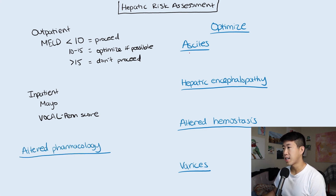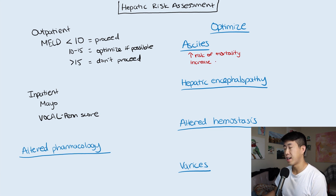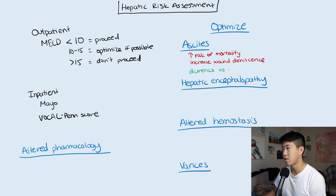Starting with ascites: any ascites prior to surgery is an increased risk factor for mortality. It increases wound dehiscence because if the abdomen is distended, it makes wound healing harder. The main treatments are diuretics versus paracentesis prior to surgery.